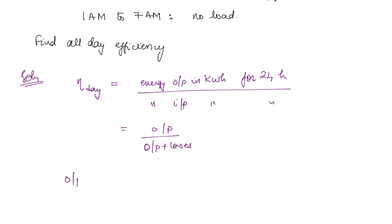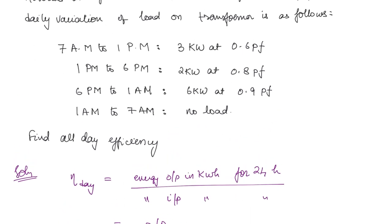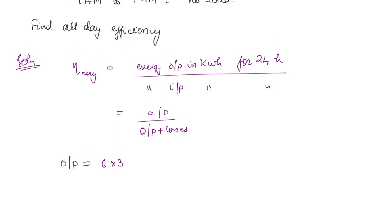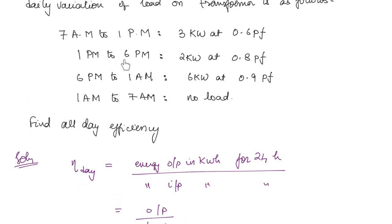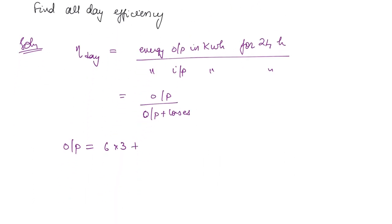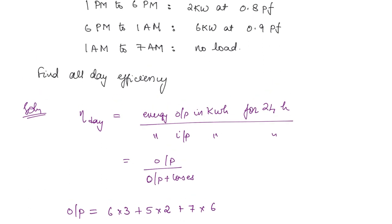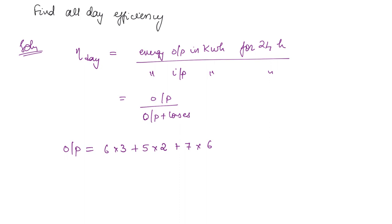Calculating the output: from 7 am to 1 pm (6 hours) the output is 3 kW, giving 6 × 3 = 18 kWh. From 1 pm to 6 pm (5 hours) the output is 2 kW, giving 5 × 2 = 10 kWh. From 6 pm to 1 am (7 hours) the output is 6 kW, giving 7 × 6 = 42 kWh. From 1 am to 7 am there is no load, so it is ignored. Total output = 70 kWh.